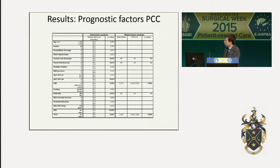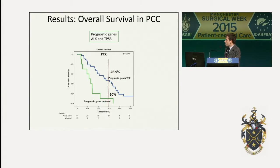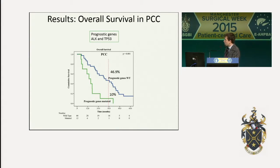For perihilar cholangiocarcinoma, caudate lobe resection, portal vein resection, lymph node status, and radicality of surgery were the main clinical prognostic factors for overall survival. ALK mutation and TP53 were the genes related to survival at univariate analysis. At multivariate analysis, lymph node ratio and TP53 were confirmed to be the strongest predictors of survival. Patients with mutations in these genes showed a poorer prognosis, with 10% survival at three years compared to 47%.